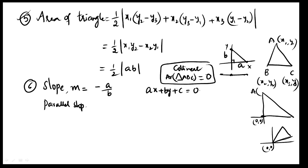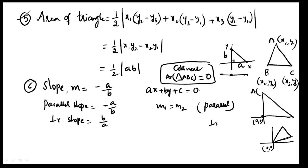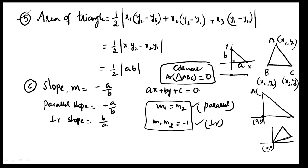Parallel slope condition: for parallel lines, the slopes are equal. Perpendicular condition: for perpendicular lines, the product of their slopes equals minus one. These are the parallel and perpendicular line conditions.